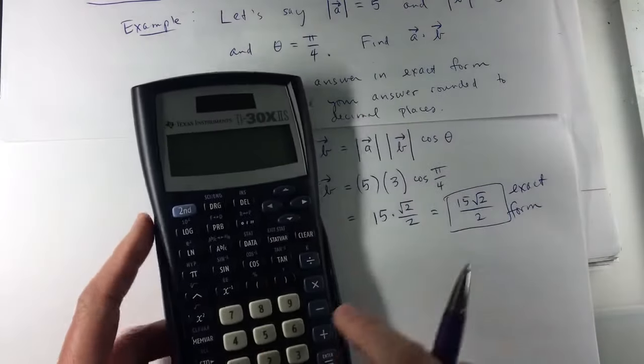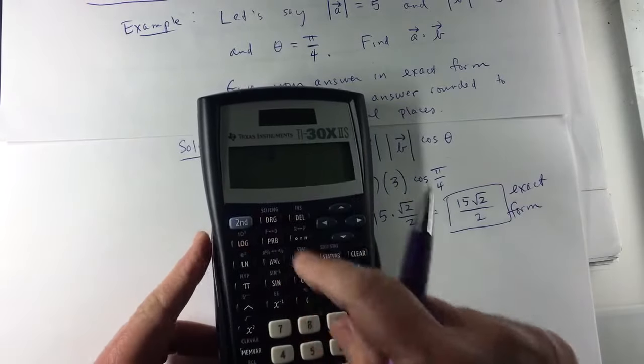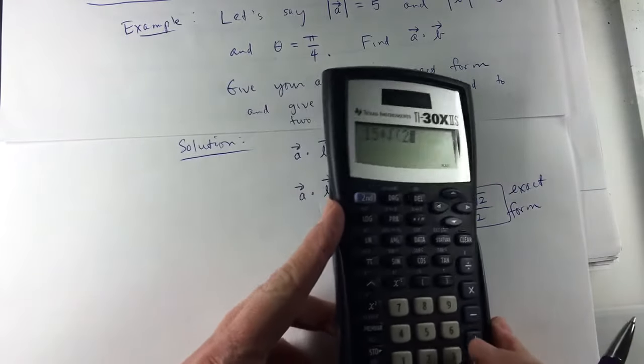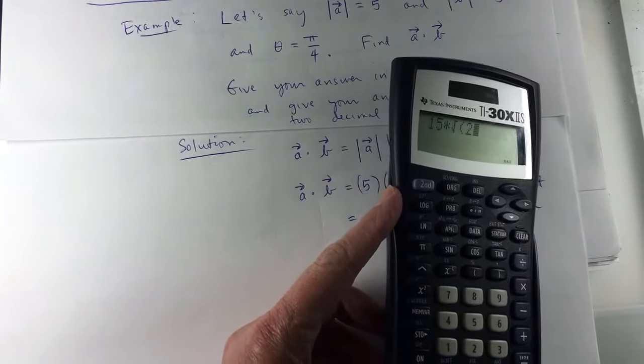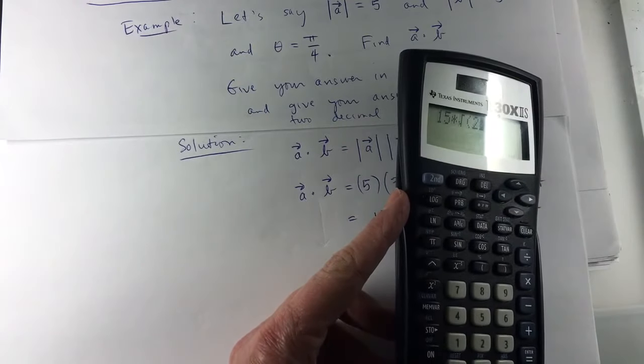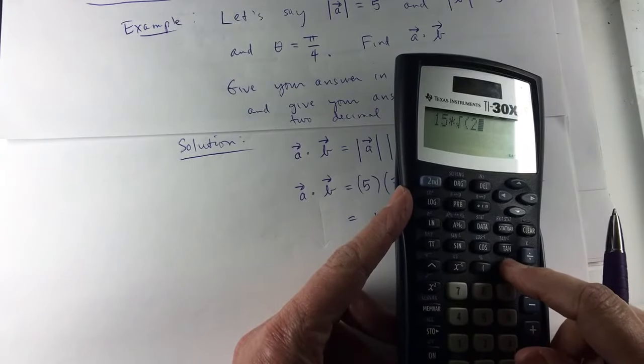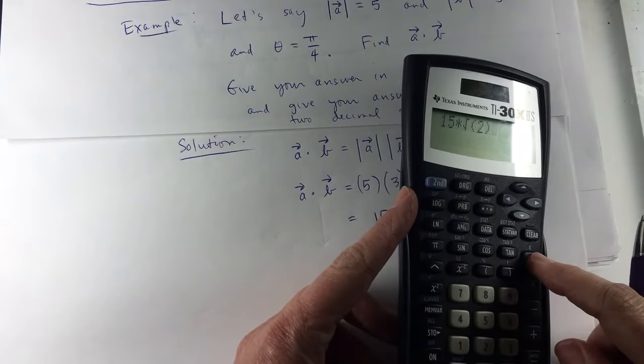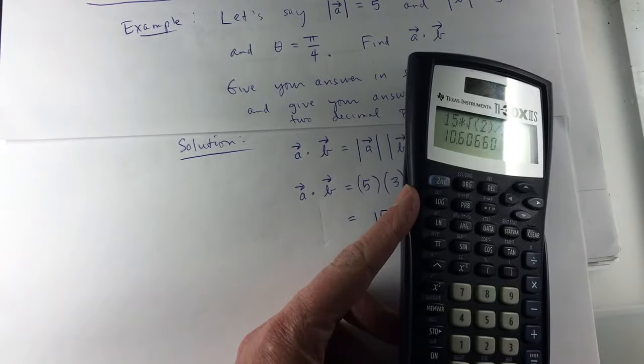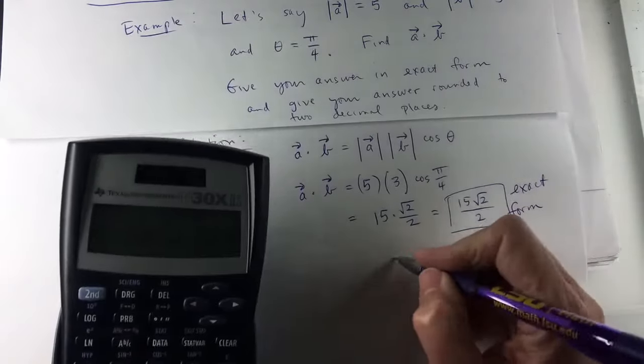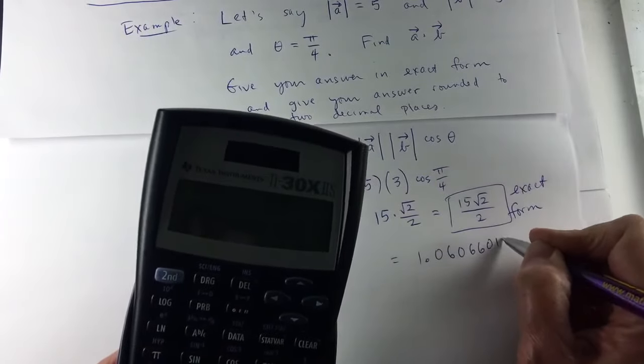And then for my decimal, 15 times the square root of 2. Let me tilt the calculator a little bit. Now this calculator opens parentheses when I press square root. You need to close those parentheses. If you don't close them, you're going to likely get the wrong answer. I got 1.060660172.